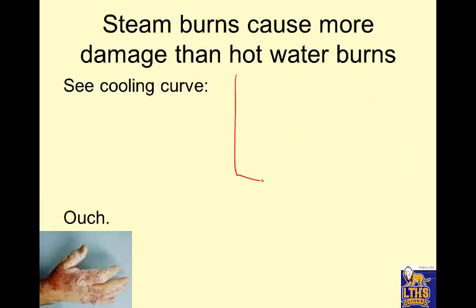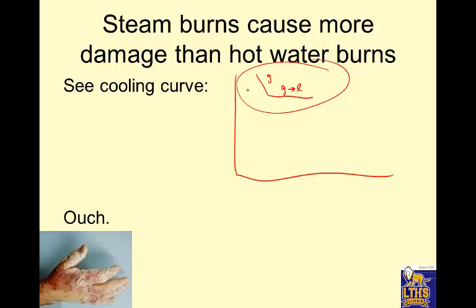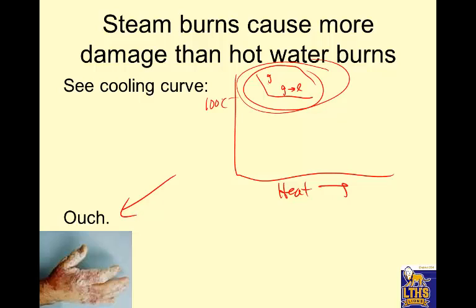Steam burns are worse than hot water burns. When steam hits your skin, it turns from gas to liquid, releasing both the kinetic energy from being at a high temperature and the potential energy from the phase change. All of that total heat goes into your arm — steam burns release both kinetic and potential energy because of the phase change.